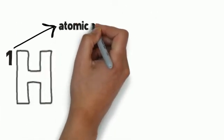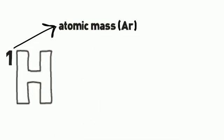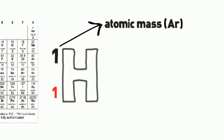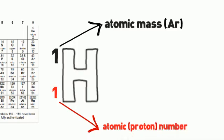The top number is the atomic mass. This is the number of protons and neutrons in the nucleus. This is also known as the AR. The bottom number is the atomic number, which is the number of protons.